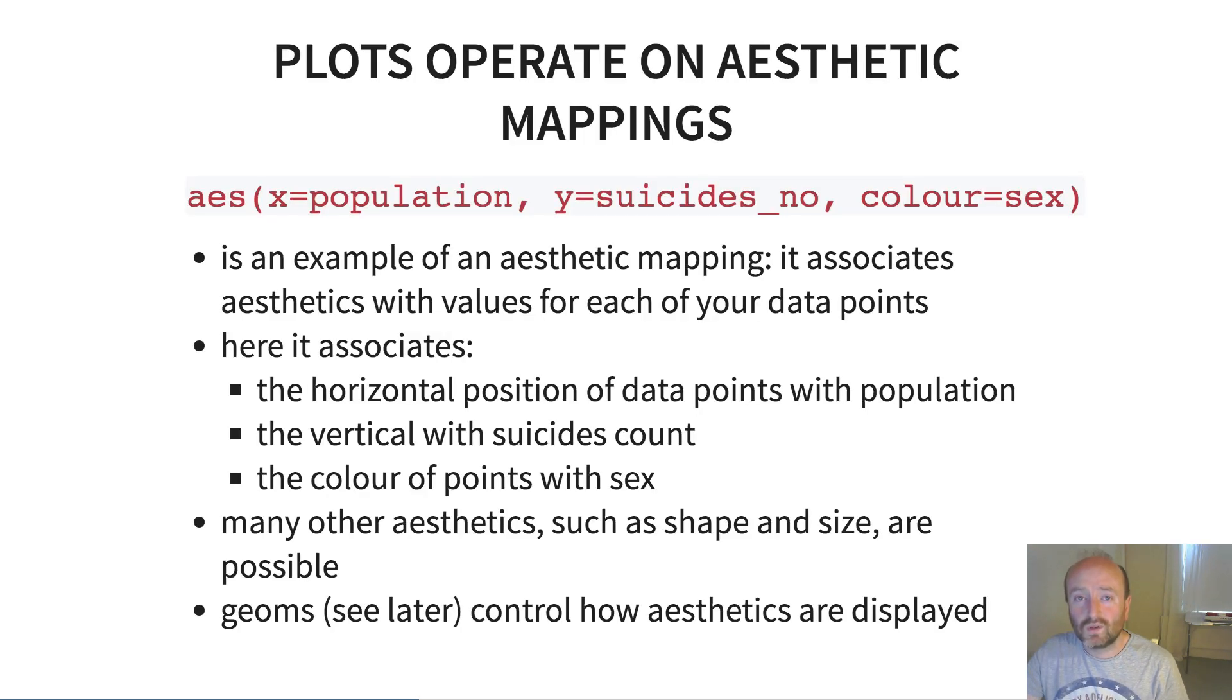So a crucial element of ggplot2 is that plots operate on so-called aesthetic mappings. And it seems like when you first come to learning ggplot2, it seems like quite an unusual concept. But I think the examples are going to illustrate much better what aesthetic mappings are. An aesthetic mapping, here I've included the one that we had on the previous slide, which is AES. That just stands for aesthetic. I've then got x equals population, y equals the count of suicides, and then the color is sex.